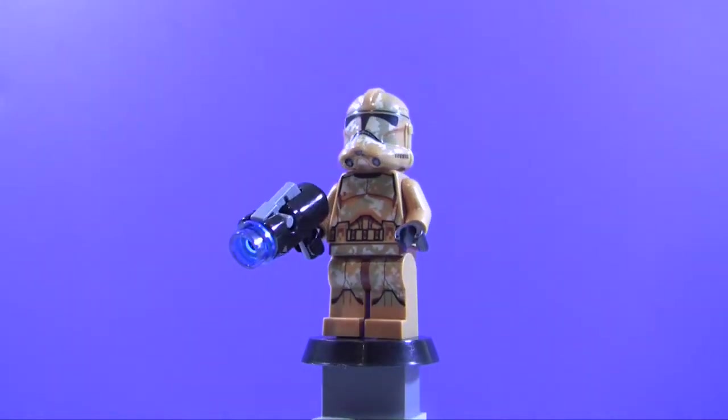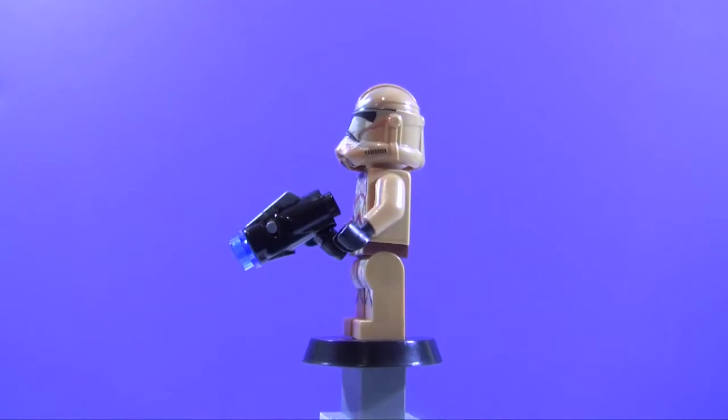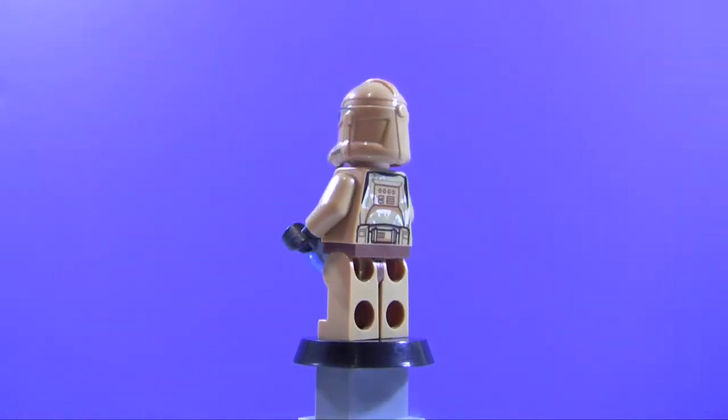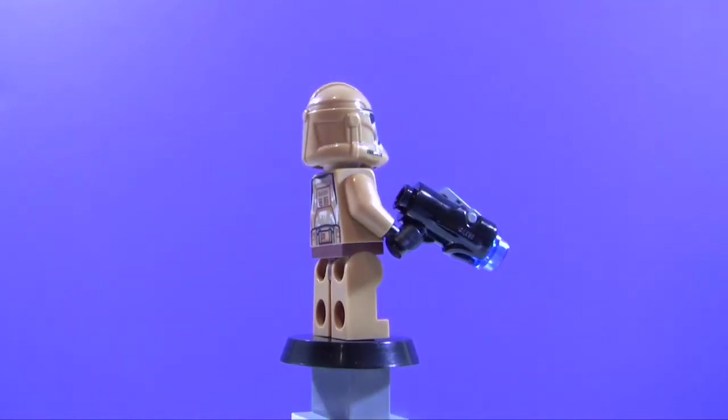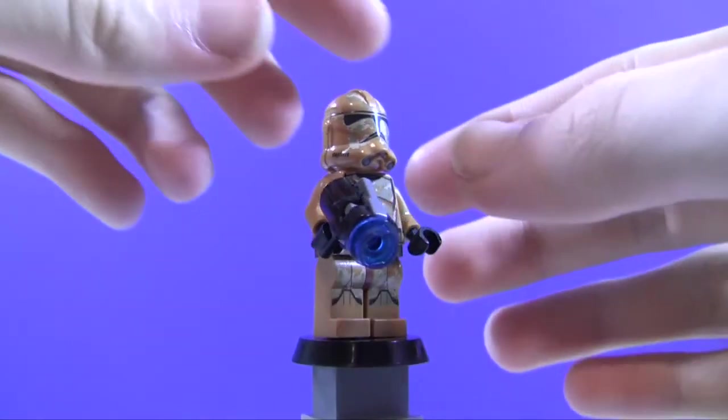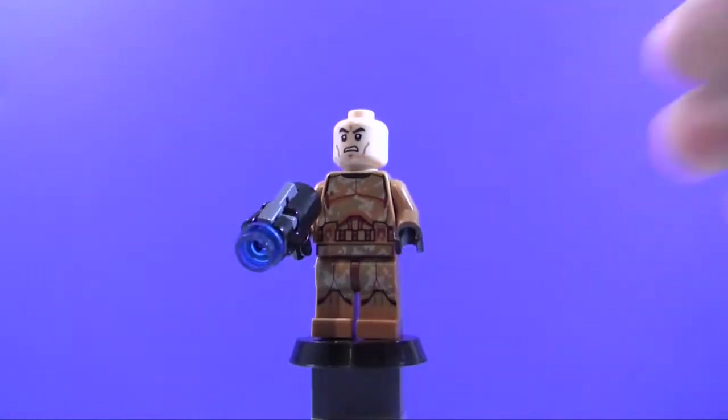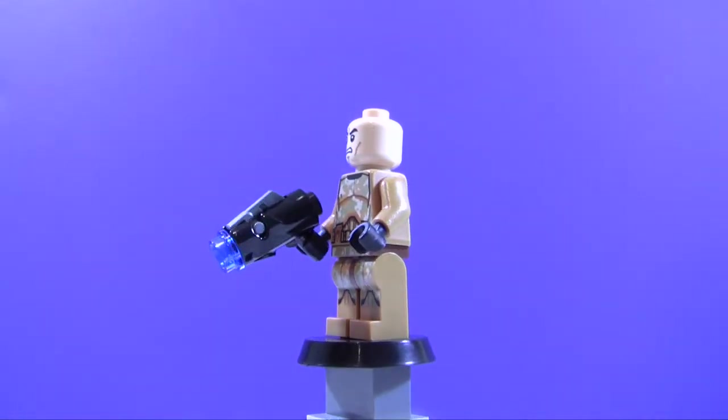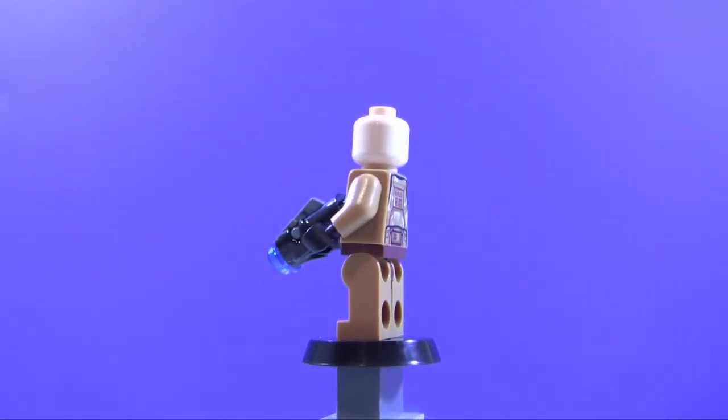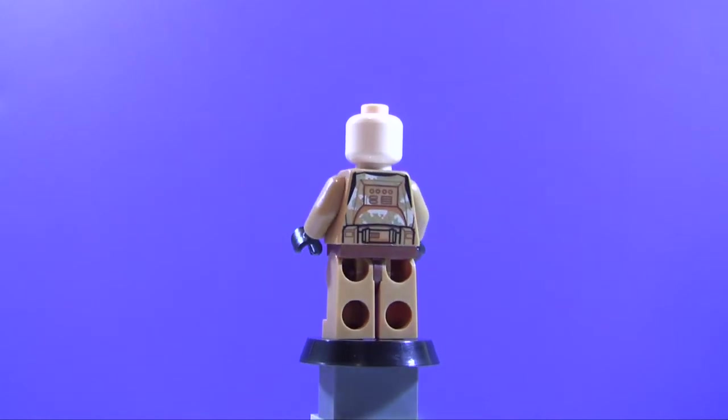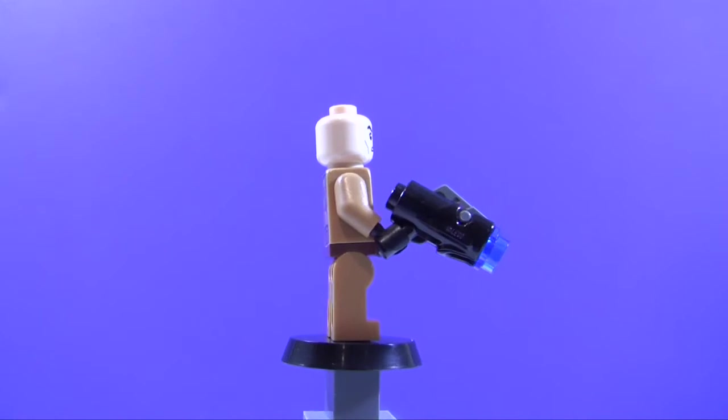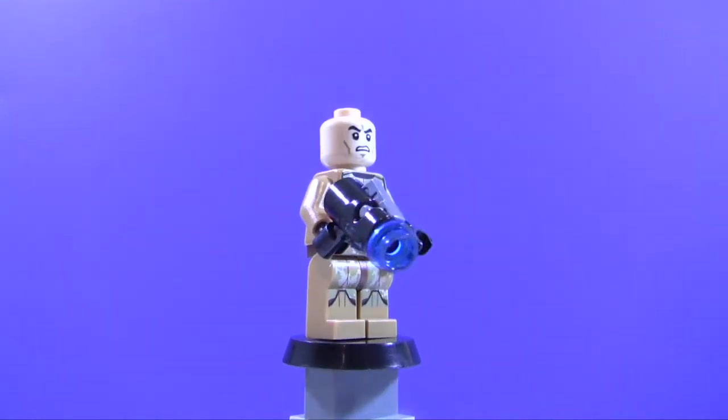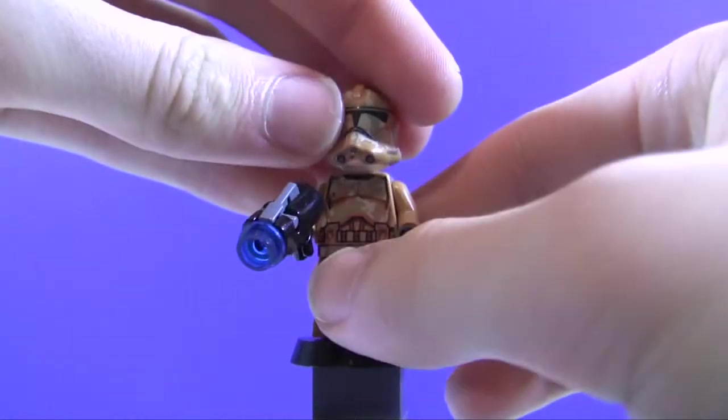On the helmet you get a pretty standard design. It's actually pretty much the same as the regular clone trooper, except you get the camo which is really similar to the Kashyyyk clone trooper in the battle pack there. As we take off the helmet, you get kind of an open face there with an open smile, kind of a grin. But other than that, pretty awesome minifigure. You do get two of these in this set, which is really awesome. I definitely think this one is really cool.